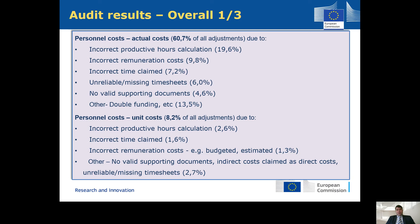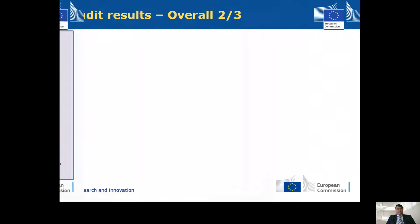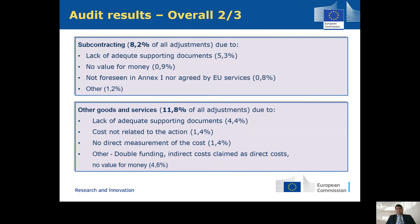Looking at actual costs, there are three main areas where you can have errors: issues with productive hours, issues with remuneration cost — which is basically the pool of costs used as the basis for the hourly rate calculation — and issues with the time claimed or with timesheets. You may also be missing some supporting documents and there may be issues with double funding. There is quite a big portion of other errors with small individual percentages. For unit costs, we see another type of error: indirect costs were claimed as direct costs.